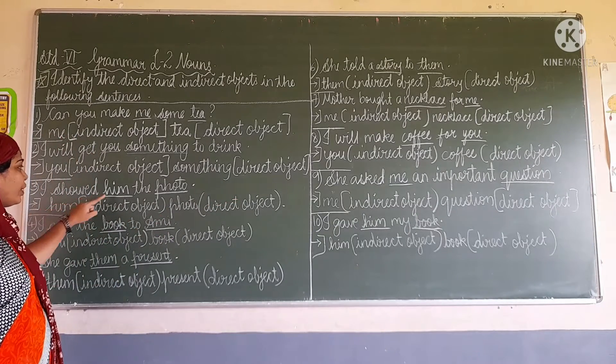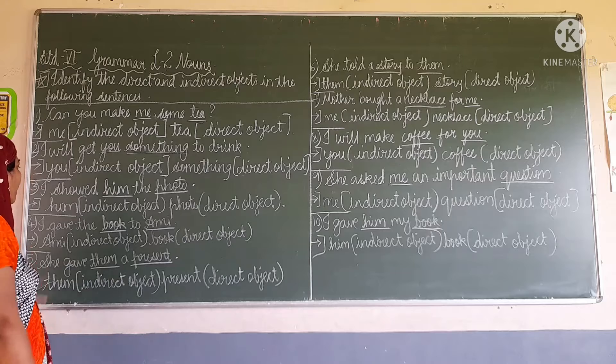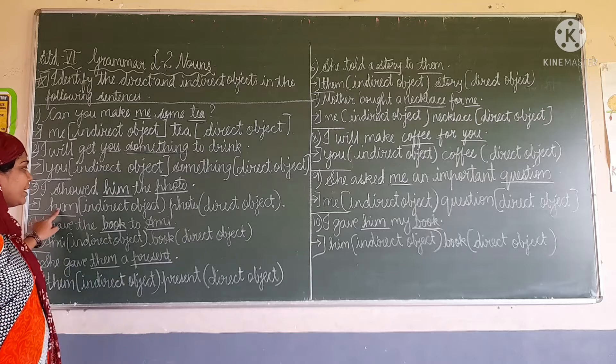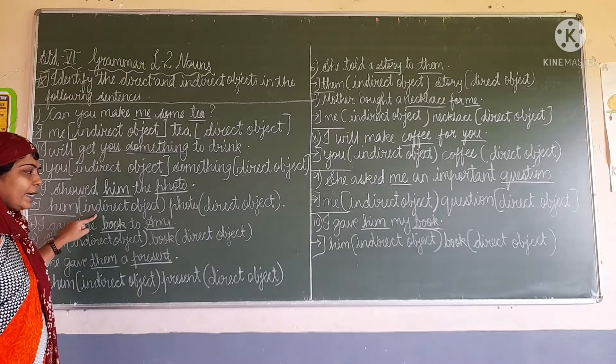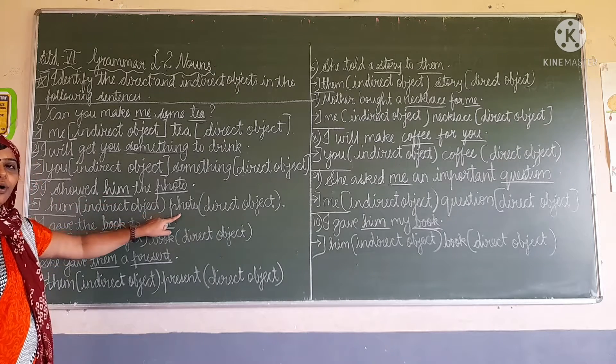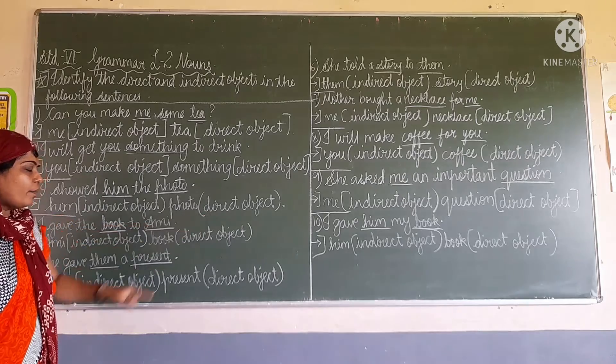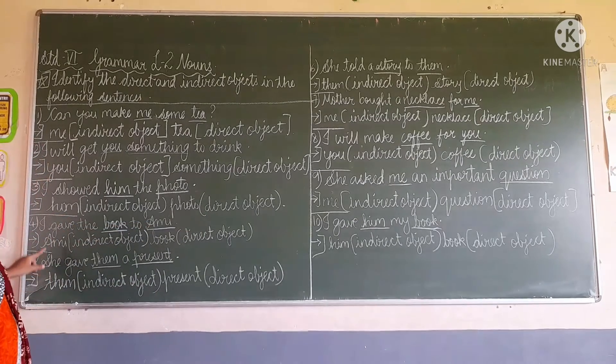I showed him the photo. Here, 'him' means the indirect object and 'photo' is the direct object.